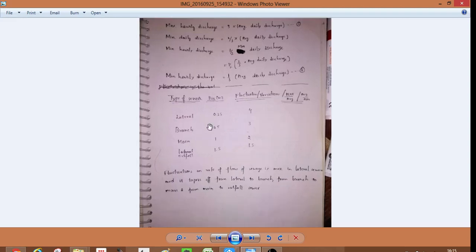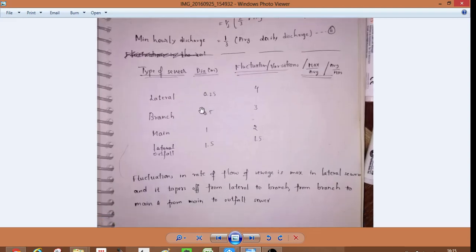I do not remember them but just for the sake of information: lateral, branch, main, outfall - 0.25, 0.51, 1.5, 4, 3, 2, 1.5.